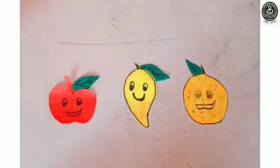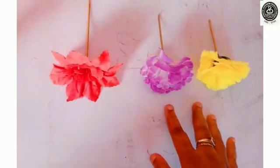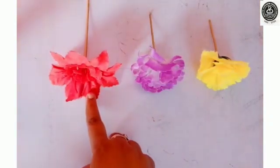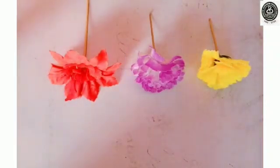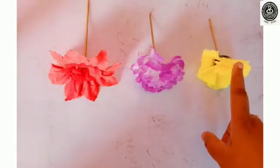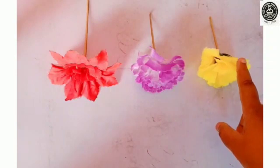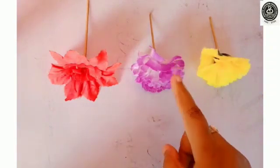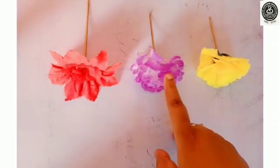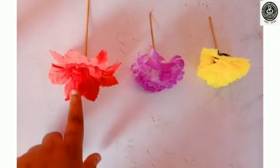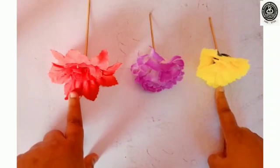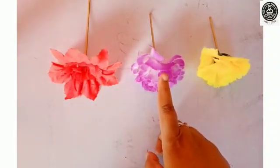Let's take another example. There are three flowers. Red, pink, yellow. Now children, can you tell me which flower is after pink color flower? After pink. That is yellow flower. And which flower is before pink color? That is red. And which flower is between red and yellow? That is pink color. Very good.